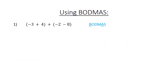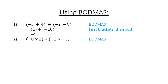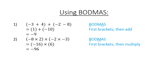Using bad math: in brackets (negative 3 plus 4), close brackets, plus negative 2, minus 8, close brackets. First simplify your brackets: (1 plus negative 10) equals negative 9. In brackets (negative 8) times 2, close brackets, times brackets (negative 6)(negative 2) times negative 3, close brackets. Negative 16 times 6 equals negative 96.